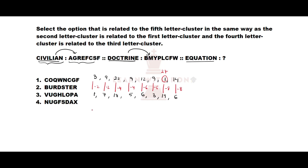Verifying with 'doctrine': D=4, so 4−2=2 (B); O=15, so 15−2=13 (M); C can be written as 29, so 29−4=25 (Y). This confirms the pattern. The subtractions applied are −2, −2, −4, −4, −6, −6, −8, −8 for each successive letter position.